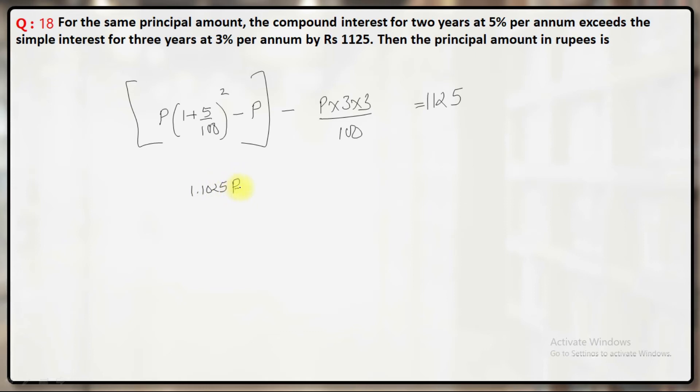P minus P is equal to this minus 0.09P is equal to 1125. When you solve it you'll get P equal to 90,000. So it's a theta question, correct answer will be 90,000.